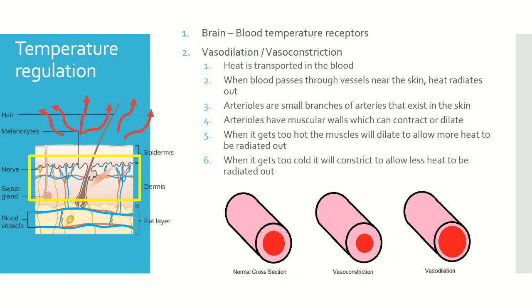If it's too cold, the opposite happens. When we want to retain heat, we want to minimize blood flow through the arterioles, so the muscles around them constrict, making the lumen smaller. Less blood flows through, less heat is radiated out, and heat is retained in the blood.